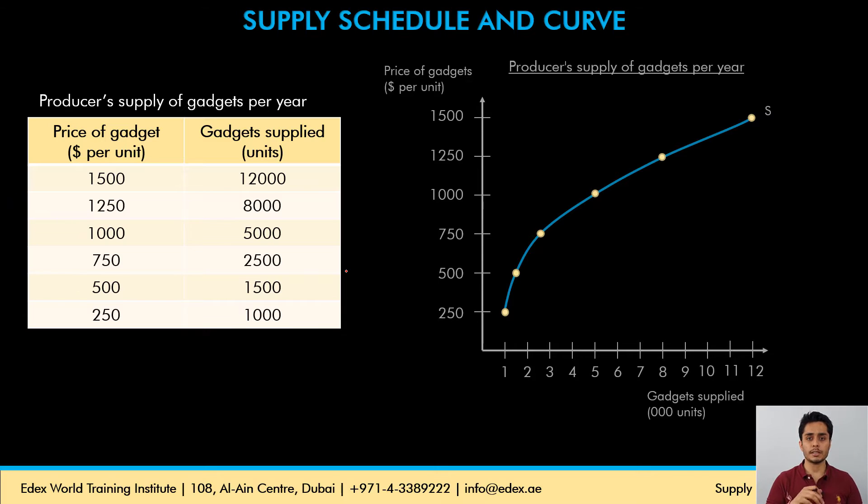If you notice, the supply curve is upward sloping, whereas our demand curve was downward sloping.